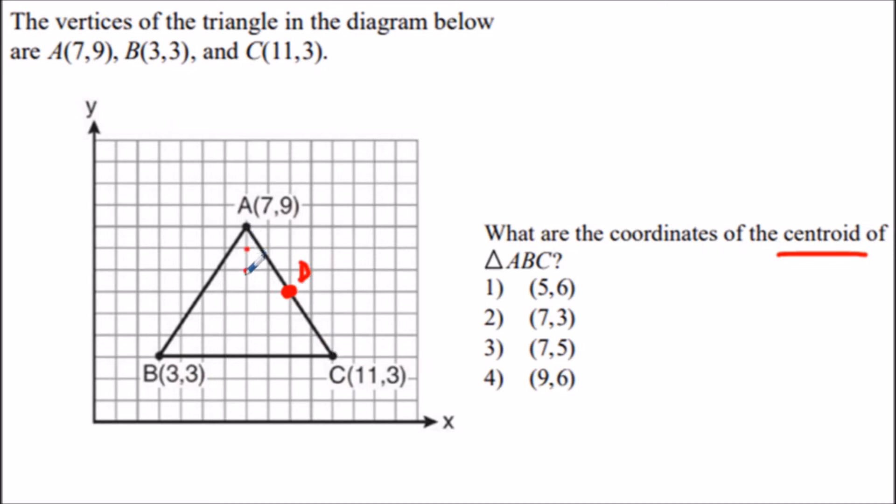We go down three and over two units, then down three and over two again. Since we have the same rise and run, D is definitely the midpoint. Now we'll connect these two points, and BD is the median of side AC.